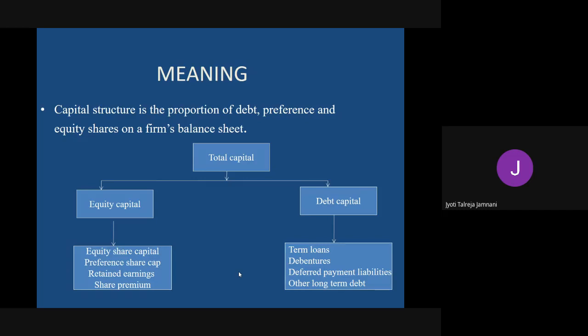Preference shareholders have preferential rights over receiving dividend - they will receive dividend first, and then equity shareholders will get the dividend. Next is retained earnings, which is nothing but the reserves and surplus that we keep out of our profits every year.